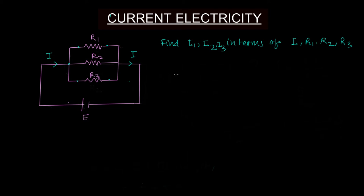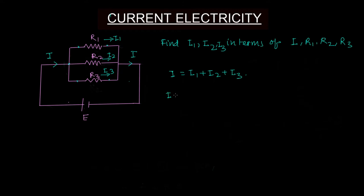We need to find the currents i1, i2, and i3 in terms of the total incoming current i, which splits into three. So i1, i2, i3 are in terms of i, r1, r2, r3. I know that i equals i1 plus i2 plus i3, and since they are in parallel: i1·r1 equals i2·r2 equals i3·r3.